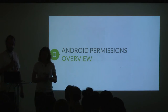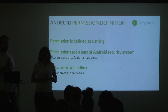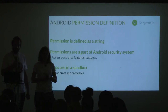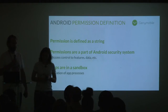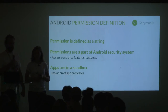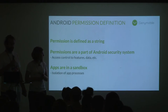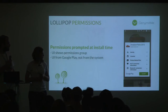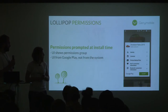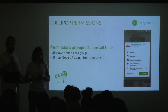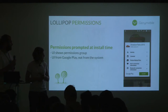About the overview from the app developer perspective: a permission is defined as a string in Android. Permissions are part of the security platform, and another point of the security platform is app sandboxing — each app gets its dedicated process. From a user point of view in Lollipop, permissions are prompted at install time, and the system displays them as groups. Those groups are unfoldable so you can see the detail of each permission. This UI is prompted from Google Play.